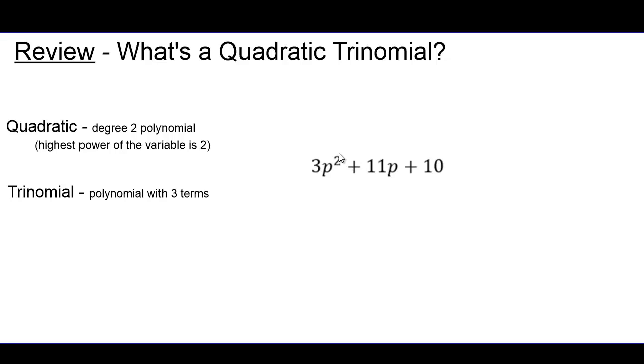So here's an example. Our variable is p, and we can clearly see that the highest power is 2, so it's certainly a quadratic. It has a squared term. And we can count the terms. Remember, terms are separated by addition, so clearly we have three terms, and that makes it a trinomial, a quadratic trinomial.